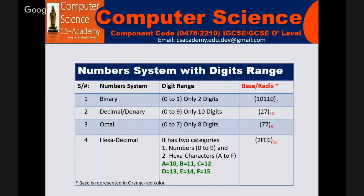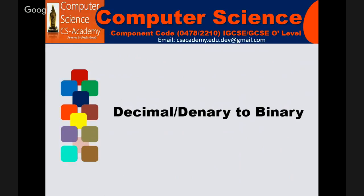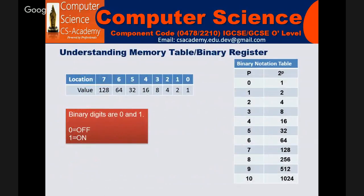Now moving on to the next one, that is decimal to binary conversion. Let's suppose we want to understand the memory table binary register. This is the very first beginning. Here you can manage this by understanding the value, the powers, and the values which will be generated by raising the power of 2.